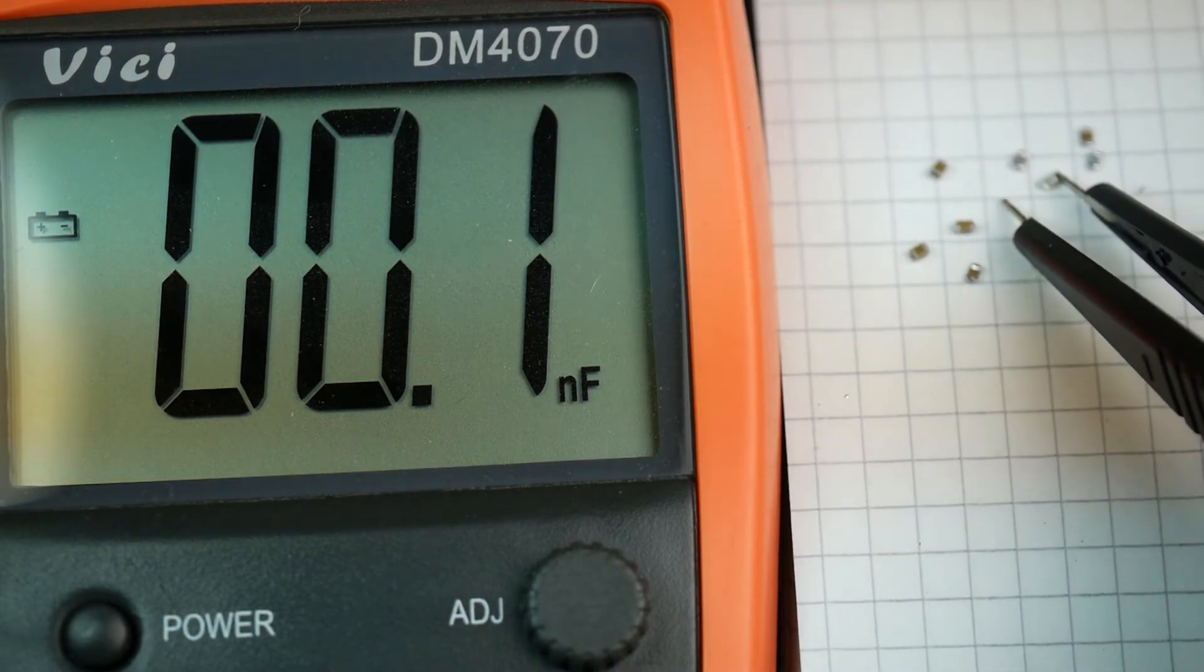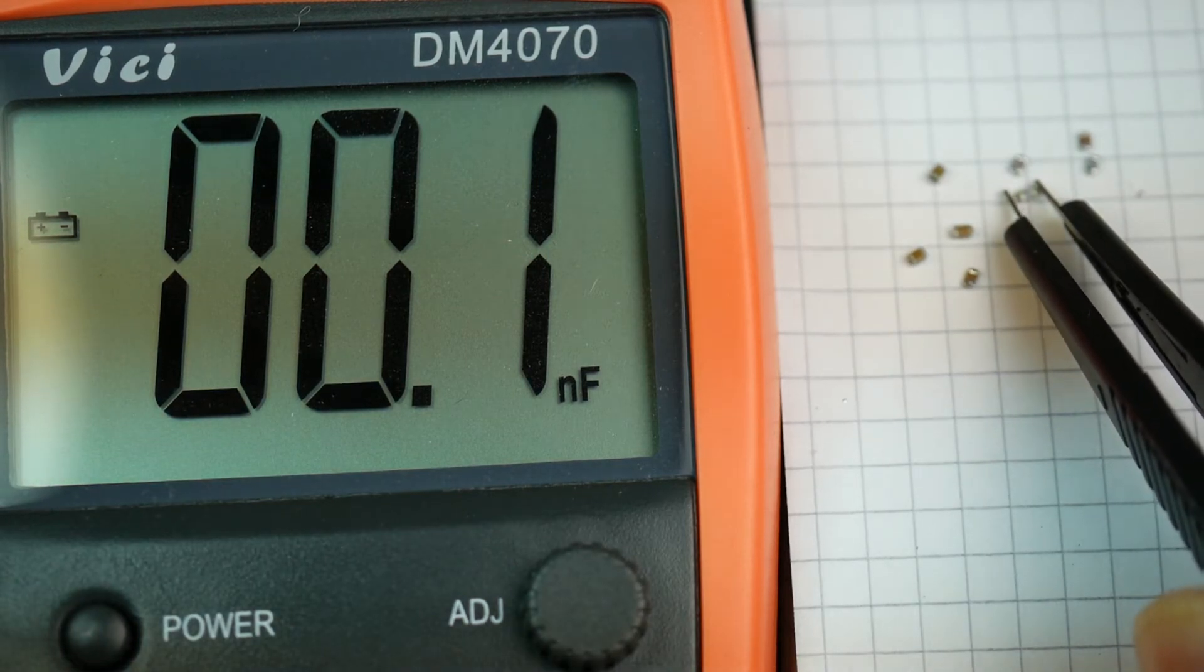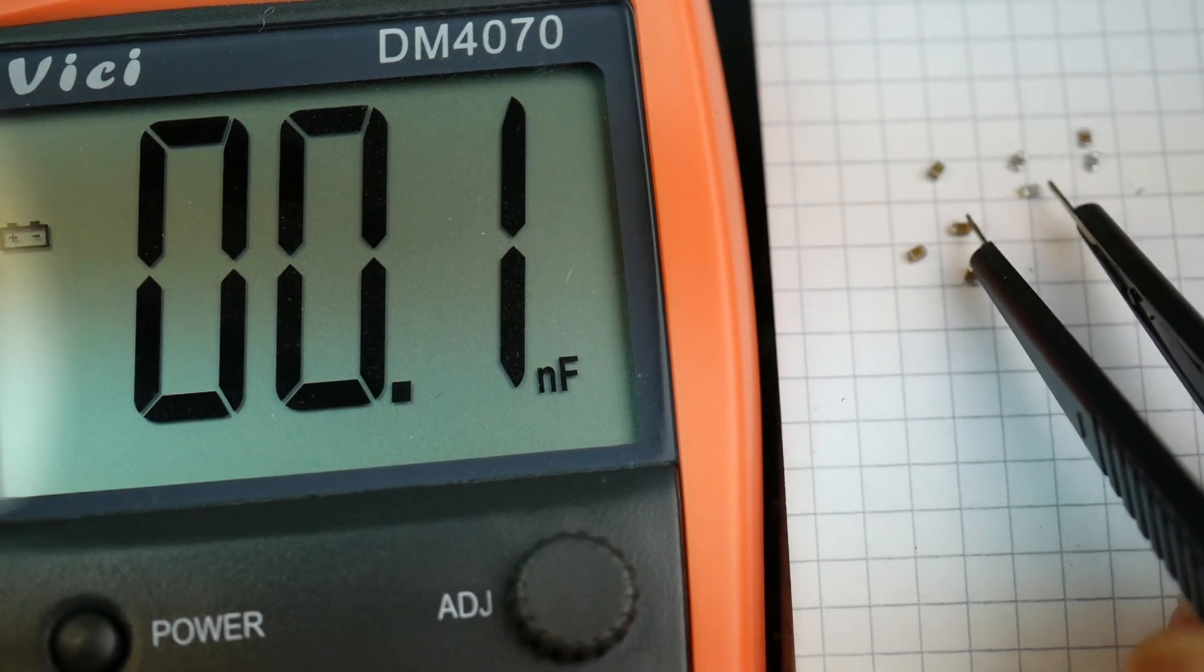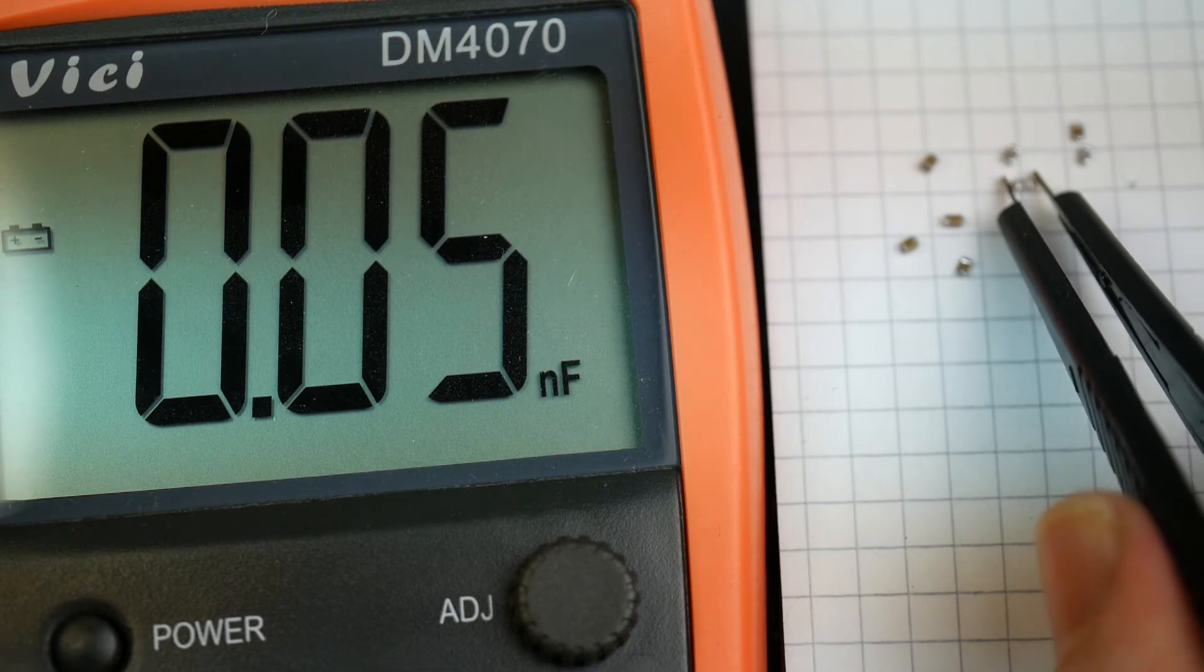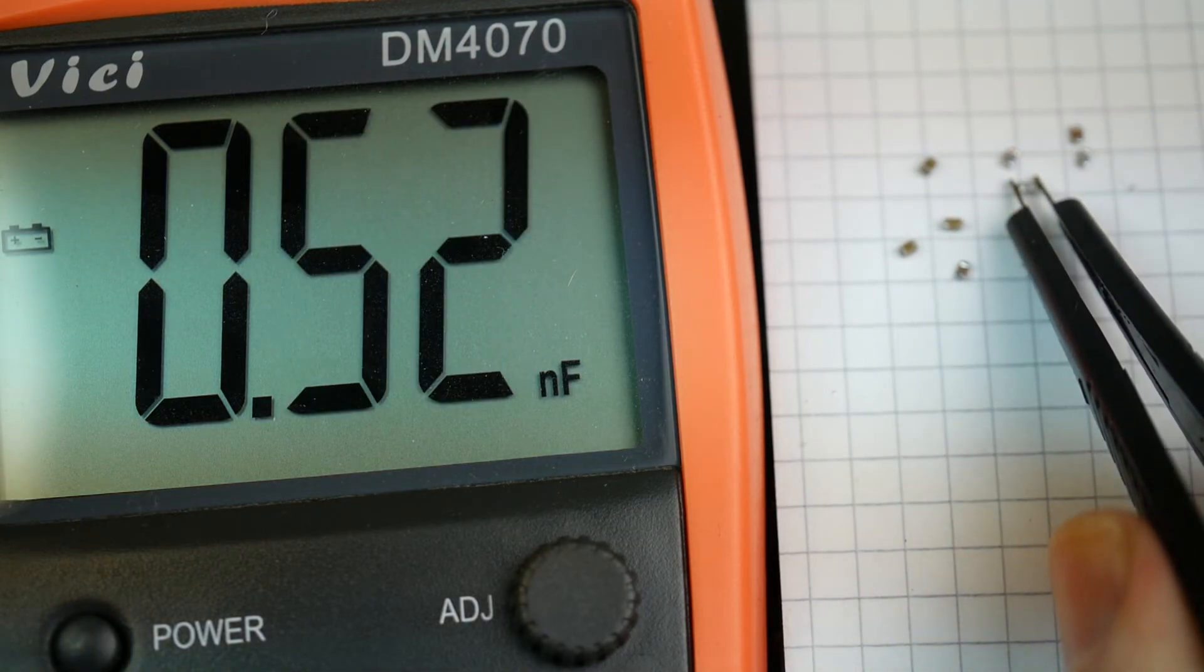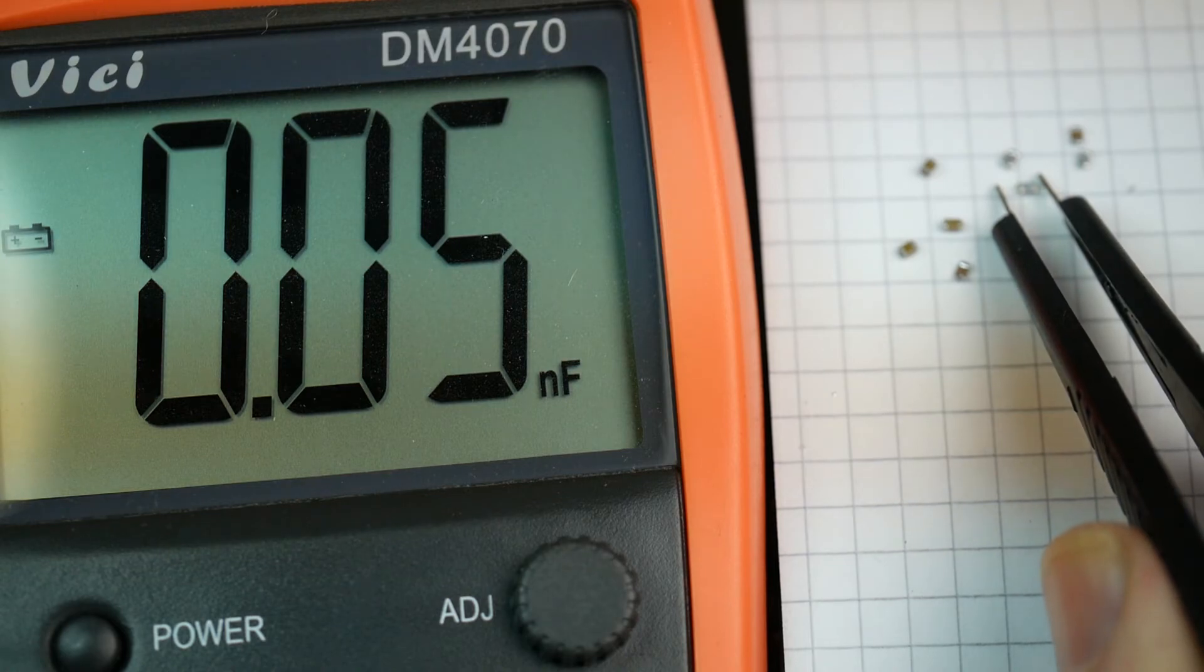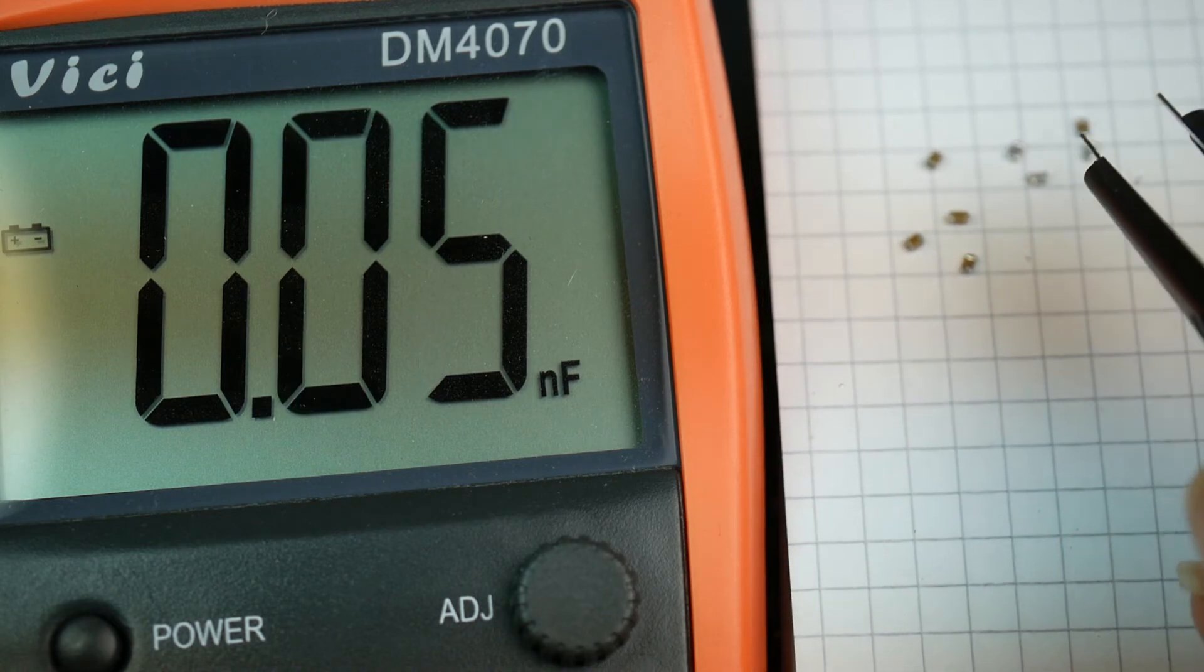That one there is a slightly different colour, so it must be a different value, right? That's much smaller. I'm not sure I can even read that. Let's change range. It is manual ranging. Yeah, it's about half an nF. Or 500 picofarads, as we used to call them.